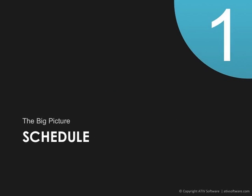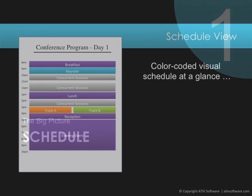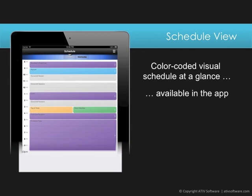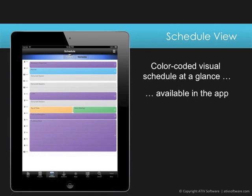Let's start with the schedule view that gives your attendees the day-to-day overview of available and scheduled items. When you go to a conference, it's nice to see a visual overview so you can easily plan each day at the event. Your schedule at a glance can be replicated within the app as time blocks in a daily calendar view.